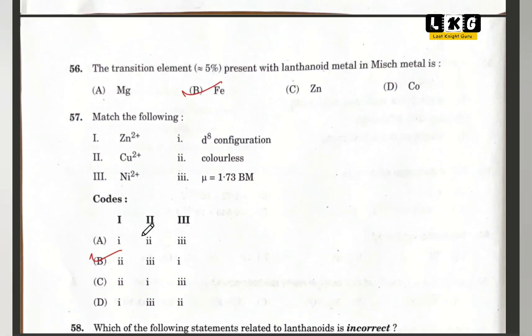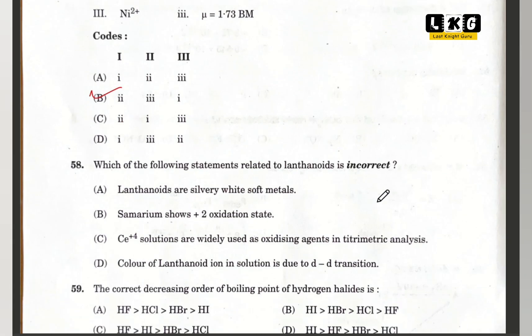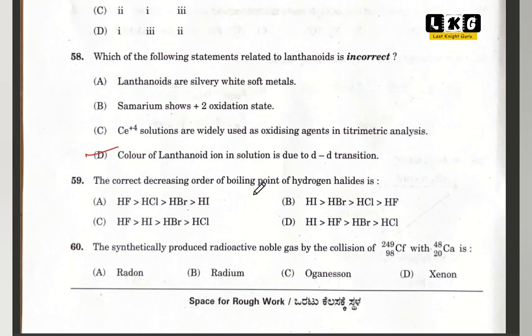Question number 58: which of the following statements related to lanthanoids is incorrect? Option D is correct — the color of the ion is due to d-to-d transition is the incorrect statement. Question number 59: the correct decreasing order of boiling points of hydrogen halides is option C.